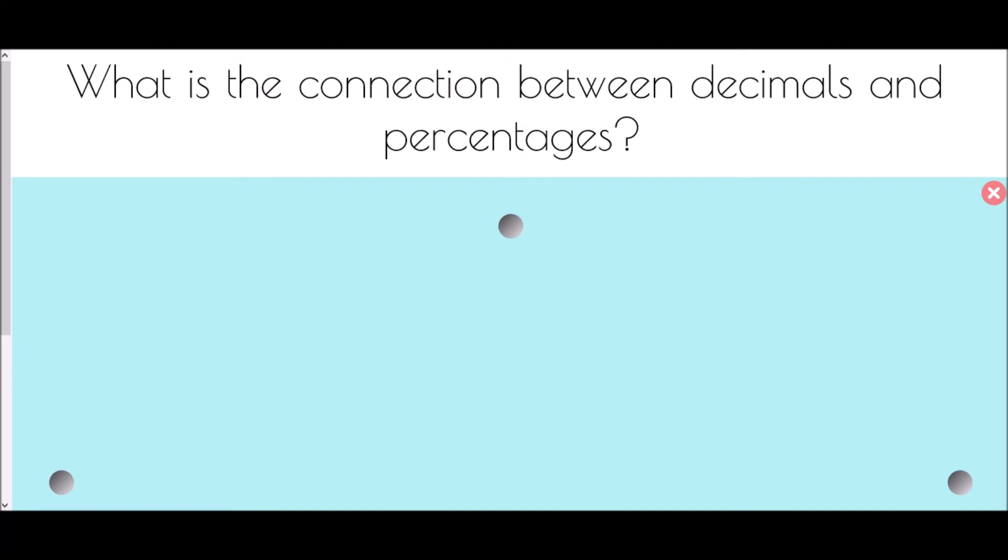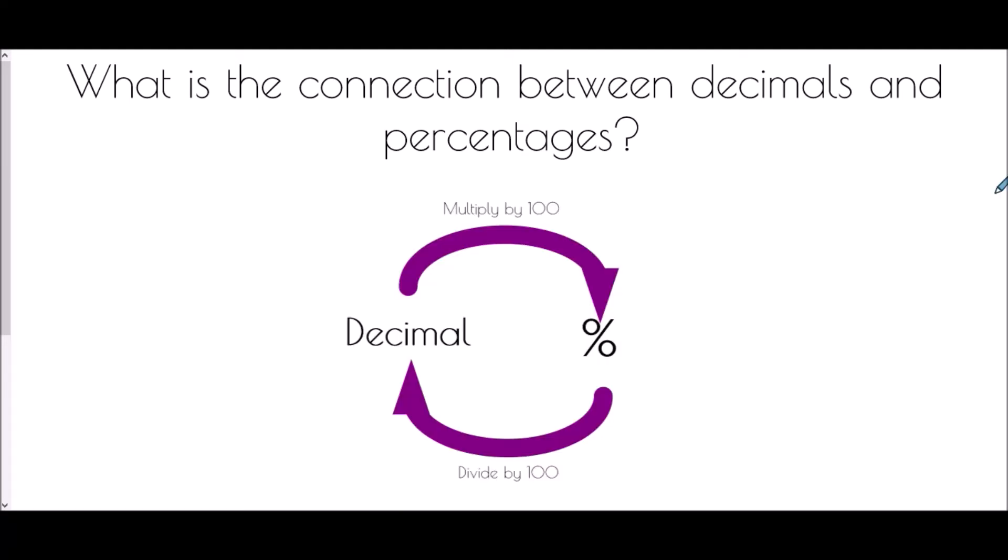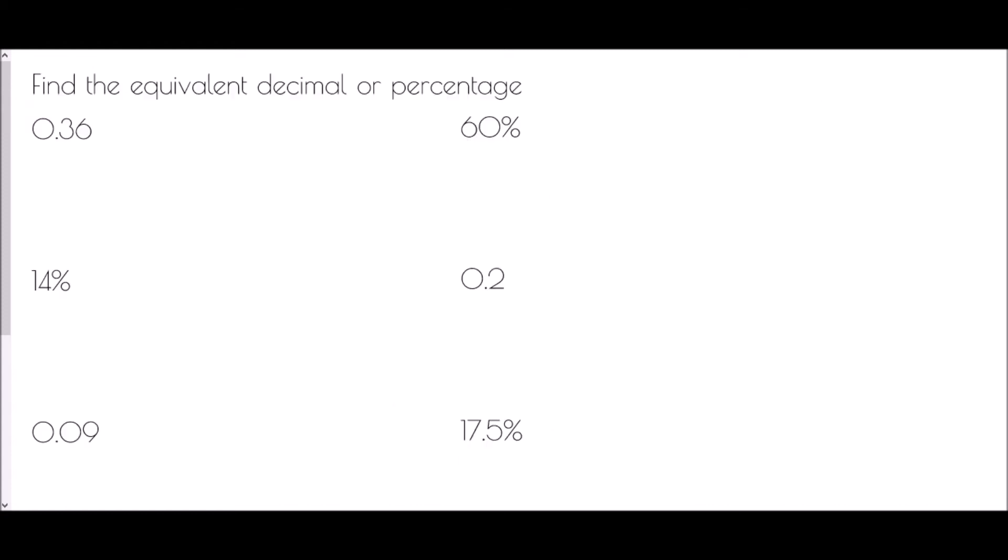Next we look at the connection between decimals and percentages. It's a very simple trick: to turn a decimal into a percentage, multiply by 100. To turn a percentage into a decimal, go the other way and divide by 100.